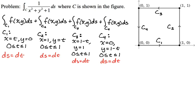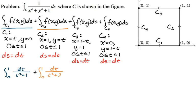I'll now rewrite all four integrals with substitutions. For c1: ds is dt, x equals t so x squared is t squared, y equals 0 so that drops out. We get the integral from 0 to 1 of dt over t squared plus 1. For c2: x is 1 so x squared is 1, y equals t so y squared is t squared. The denominator is t squared plus 2, so it's the integral from 0 to 1 of dt over t squared plus 2.